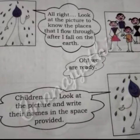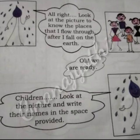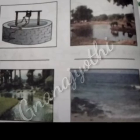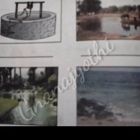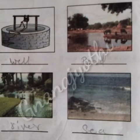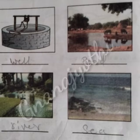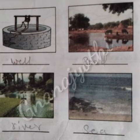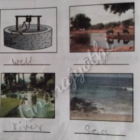Drop of water replied: Children, look at the pictures and write their names in the space provided. See children, this is well, pond, river, sea. These are the sources of water.